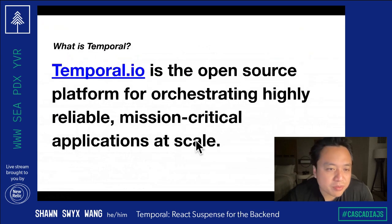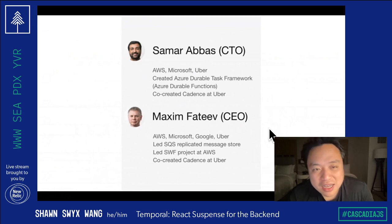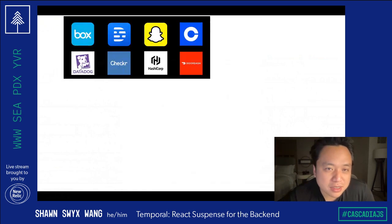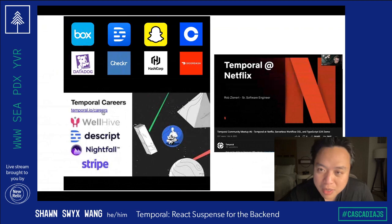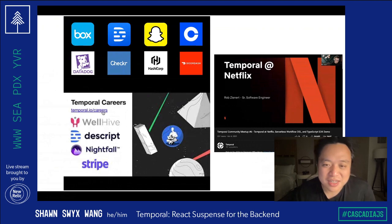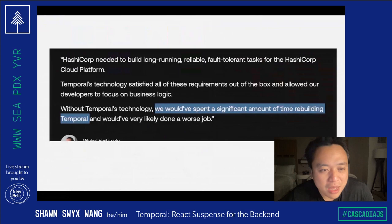So what is Temporal? Temporal is the open source platform for orchestrating highly reliable, mission-critical applications at scale. It came out of Uber — our co-founders started this project at Uber, open sourced it, and it got a lot of adoption at places like Box, Descript, Snapchat, Coinbase, and Datadog. A bunch of companies are also hiring for this if you ever want a job doing that. At our most recent meetup, we had Netflix presenting about how they're using us for CI/CD, which ties into the previous talk. When you have something that is genuinely reinventing asynchronous programming, you can apply it to a lot of different things.